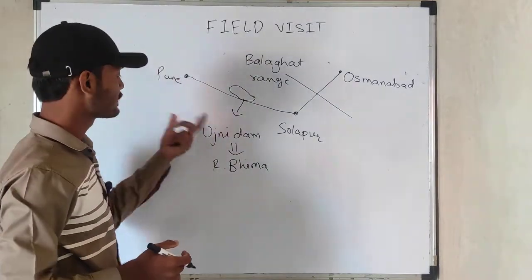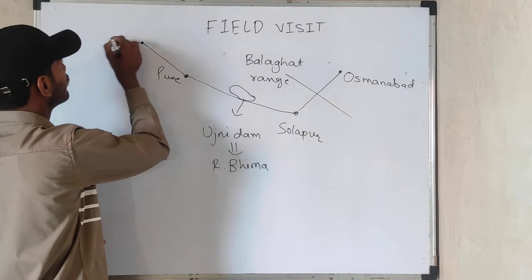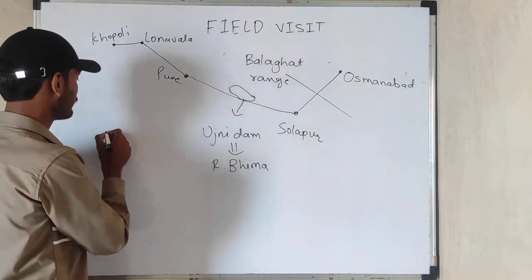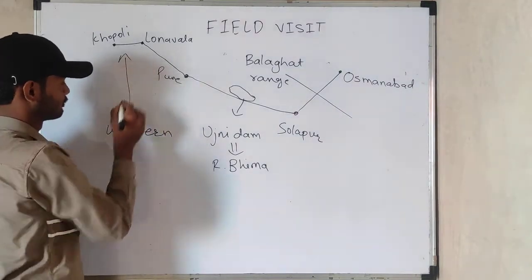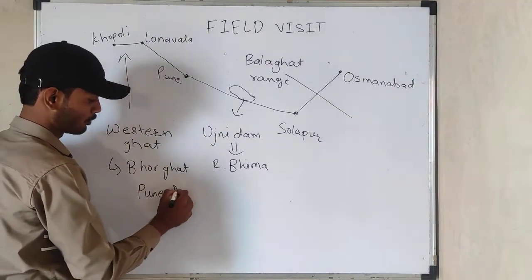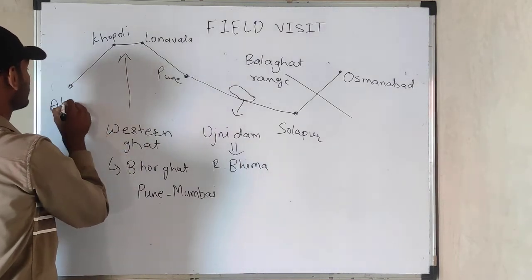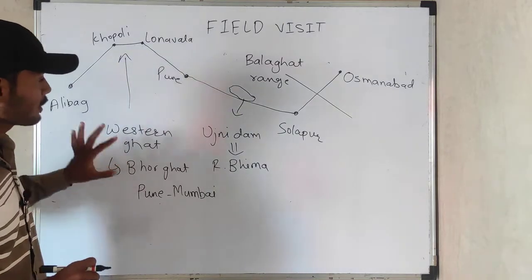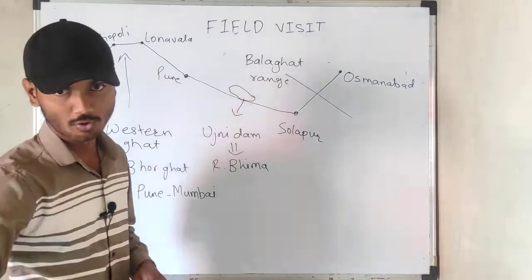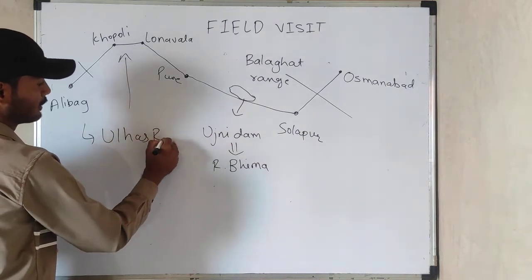So we have Ujani Dam on river Bhima. Then coming to Pune, there is Khadagvasla Dam on river Mutha. From Pune to Lonavala and then to Khopoli, there is an important pass in the Western Ghats in this region, and its name is Borghaat. This pass connects Pune to Mumbai — an important point to remember. Moving toward the Alibag region, they cross the Western Ghats. Here there is a west-flowing river called the Ulhas River.